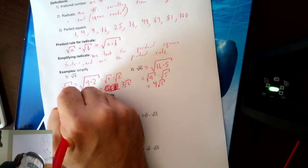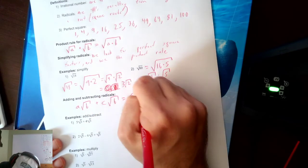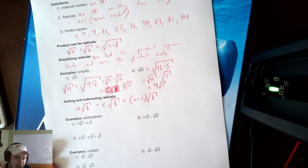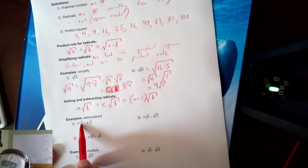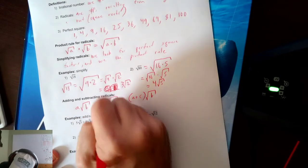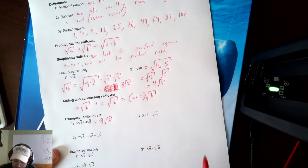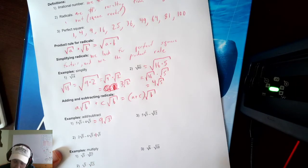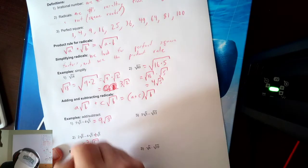Now, adding and subtracting radicals. If I have a square root of b plus c square roots of b, then I can add the coefficients together and keep the radical. They have to have the same number under the radical — you cannot combine different radicands. For example, 5 square roots of 3 plus 4 square roots of 3: 5 plus 4 is 9, so that's 9 square roots of 3. It doesn't change what's under the radical; you just add the numbers in front.